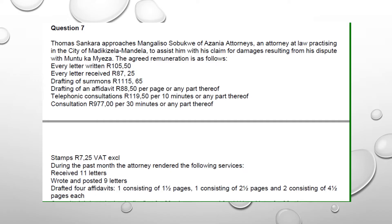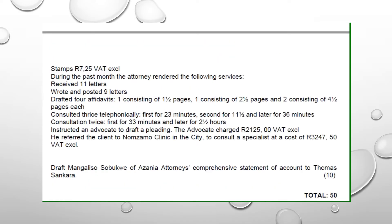Stamps: R7.25 VAT exclusive. During the past month the attorney rendered the following services: received 11 letters charged at R87.25, and wrote and posted 9 letters. With this, you need to remember that when you post something you're supposed to add stamps to it — this is where stamps come in on the postage of letters. Writing a letter is charged at R105.50.